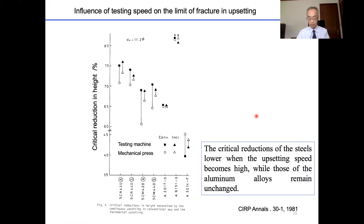Therefore, the critical reduction in height at which cracking occurs at first were determined by upsetting specimens in a conventional way on a mechanical press and were compared with those obtained on a hydraulic material testing machine. The result obtained in this figure shows that the critical reduction of the steels lower when the upsetting speed becomes high, while those of the aluminum alloy remains unchanged.